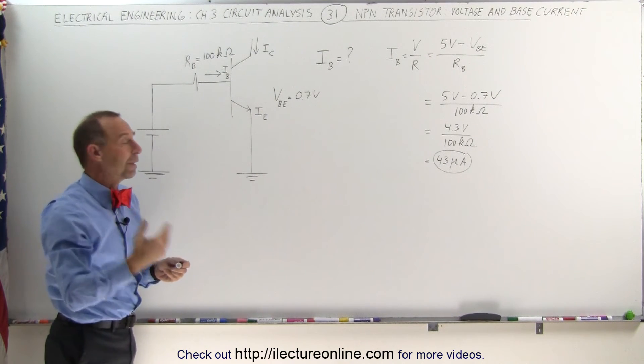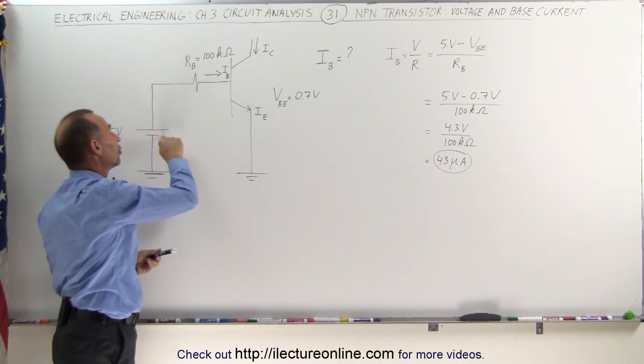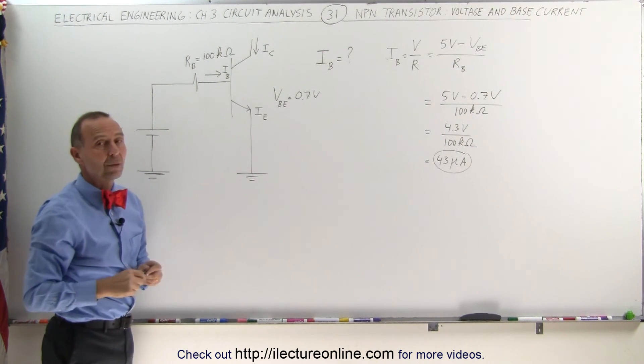So if you want to be able to control the base current, you can do it in two ways: control the voltage supply or control the resistor.